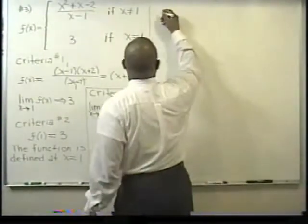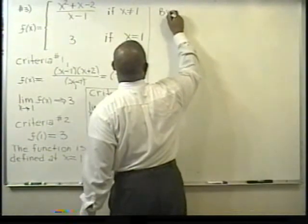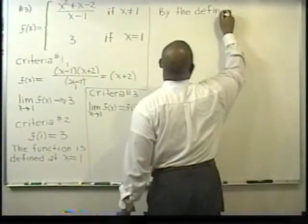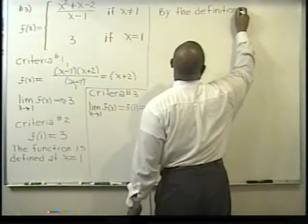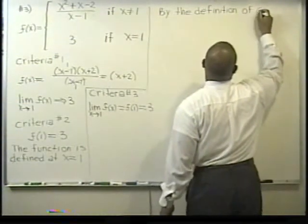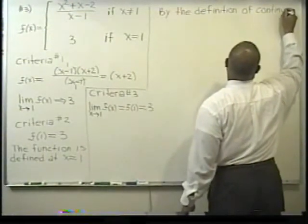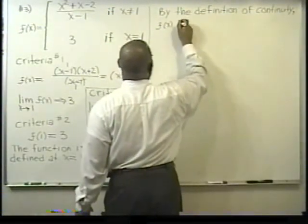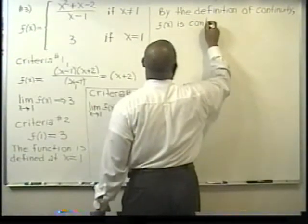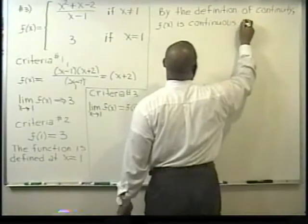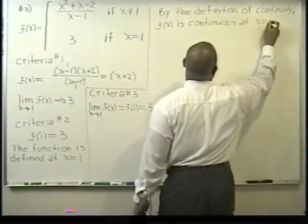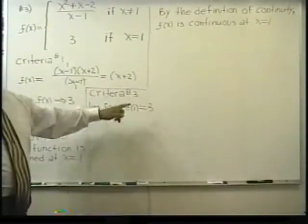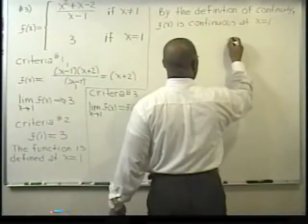Let me write that. So, it is continuous at x equals one. Well, now, we know we're going to use f of x equals x plus two, and we did that before. Let's go ahead and do the graph right now.